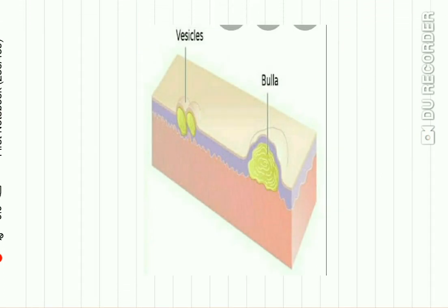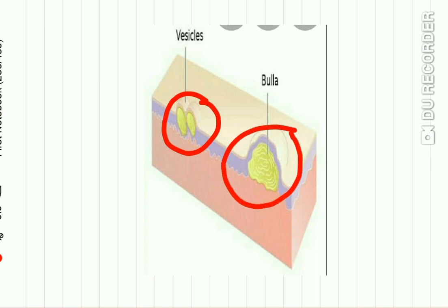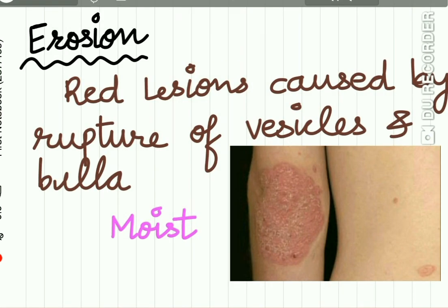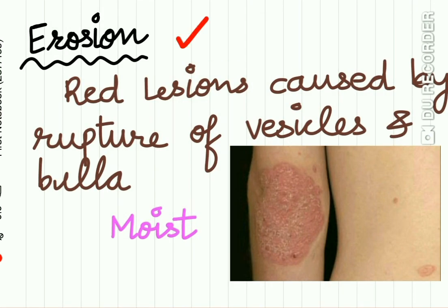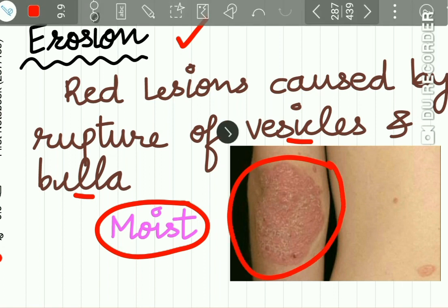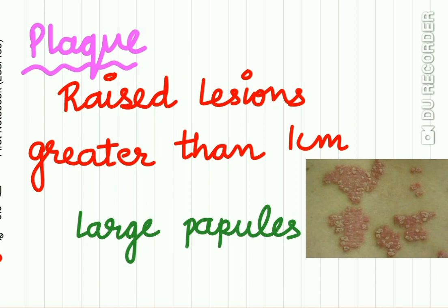In this diagram you can see the vesicle and bulla. The vesicle is smaller — less than 5 mm — and the bulla is larger, more than 5 mm in diameter; both are present below the epithelium. Erosion refers to red lesions caused by the rupture of a vesicle or bulla, and they are mostly moist. When vesicles or bullae rupture, they leave behind red moist lesions called erosions. A plaque is a raised lesion, somewhat raised above the skin surface, and is greater than 1 cm.